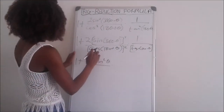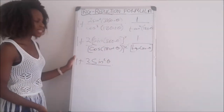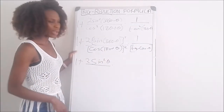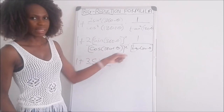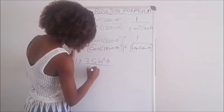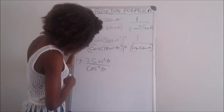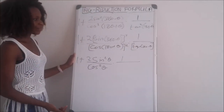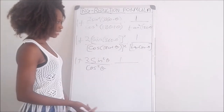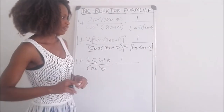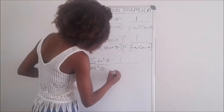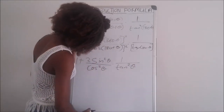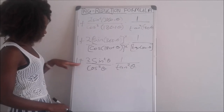Divided by cos squared (180 plus theta): 180 plus theta is in the third quadrant where only tan is positive, so cos is negative there — but squared gives us positive cos squared theta. Then 1 divided by tan squared (180 minus theta): 180 minus theta is in the second quadrant where only sine is positive, so tan is negative — but squared gives us positive tan squared theta.